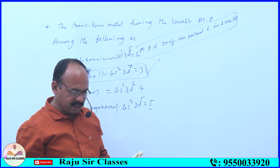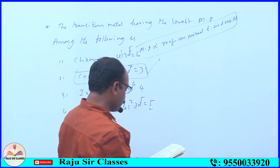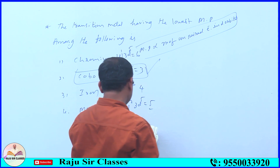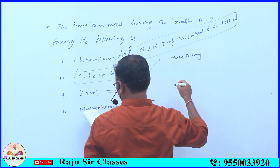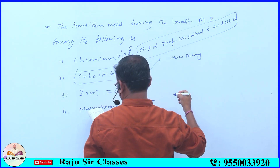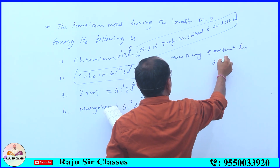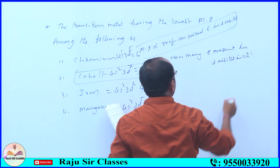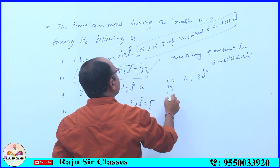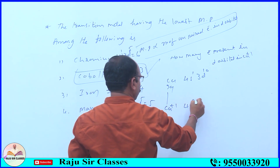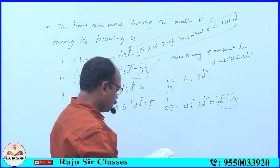How many electrons are present in the d-orbital of Cu+? Copper (atomic number 29) has the configuration 4s1 3d10. When it loses one electron to form Cu+, the configuration becomes 4s0 3d10. So d10 means 10 electrons are in the d-orbital.